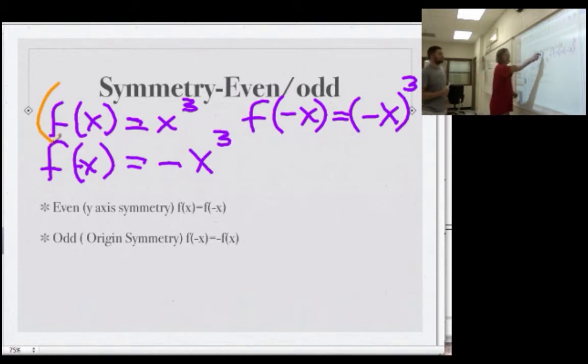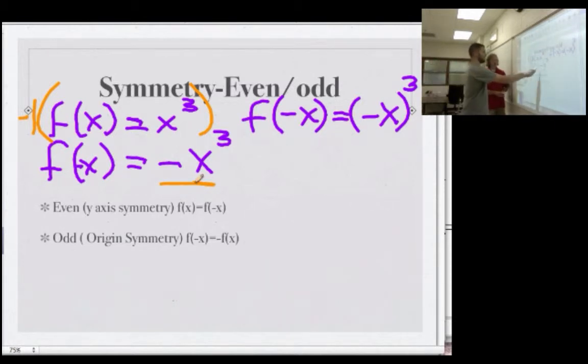If you took negative 1 times that one, do you get this one? Yeah, you do. Yeah. That gives you the negative out in front here, right? Yeah, this negative 1 would give you the negative right there. So, yes.